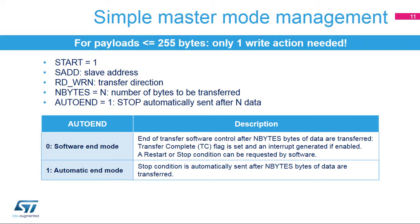Master mode software management is very simple. Only one write action is needed to handle a master transfer with a payload smaller than 255 bytes. The full protocol is managed by the hardware. In order to start a transfer in master mode, I2C control register 2 must be written with the start condition request, the slave address, the transfer direction, the number of bytes to be transferred, and the end of transfer mode. End of transfer mode is configured by the auto end bit.